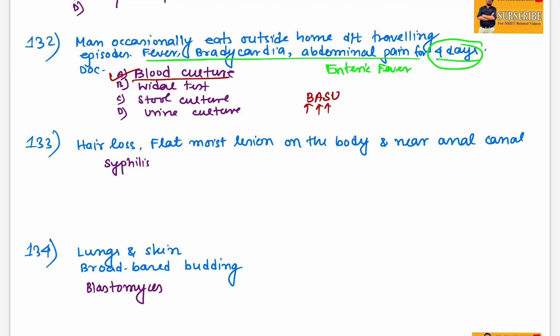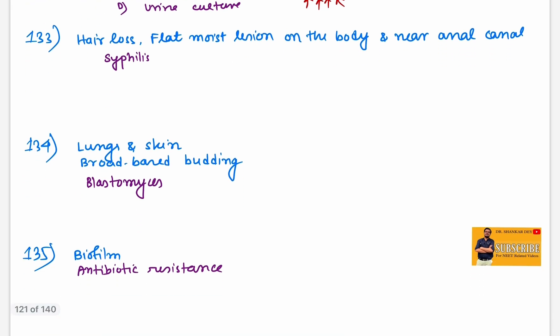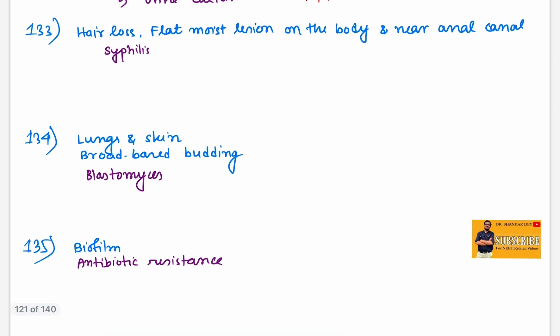Hair loss, flat moist lesion. I think in the hair there were multiple moth-eaten lesions along with flat moist lesions on the body and near anal canal. Hair loss moth-eaten type, this is syphilis. Treponema pallidum. Answer is syphilis.